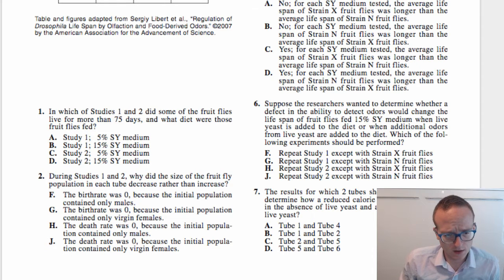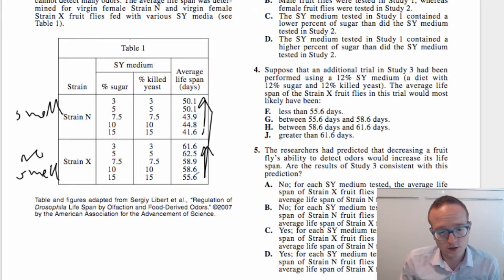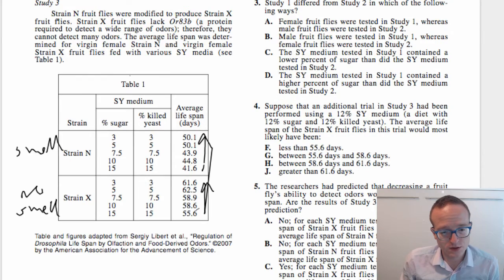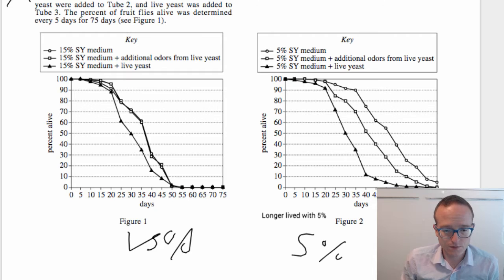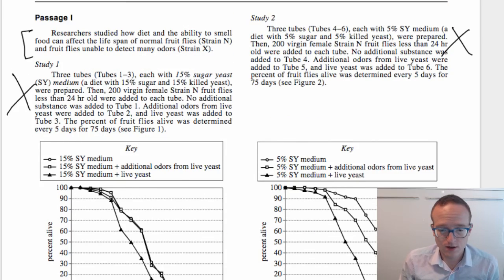Okay, sorry for the delay. I had to go back and do a little bit of erasing here. In which of studies one and two did some of the fruit flies live for more than 75 days, and what diet were those fruit flies fed? Okay, so this is something that we should be noticing immediately, is that they're telling us to point at exactly studies one and two. So remember that we got three studies. Study three is this little table, and studies one and two are the little graphs up here. So we want to find where flies live for more than 75 days. So here we've got the number of days. We want some percent alive after 75.